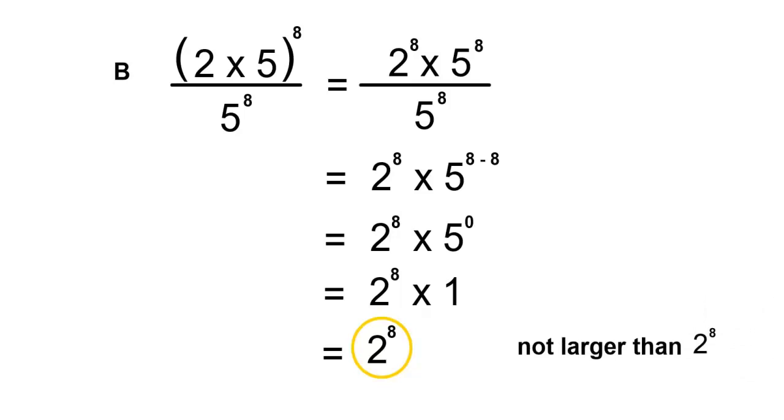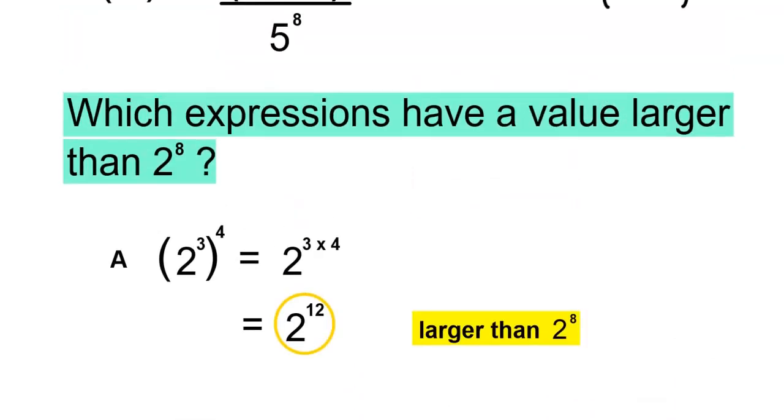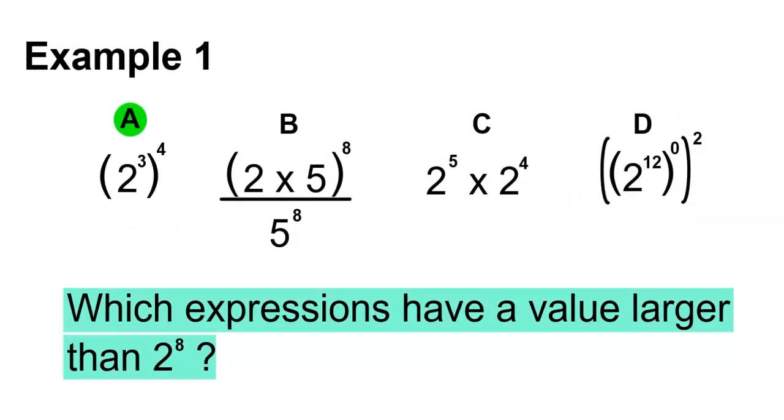And 2 to the 8 is not larger than 2 to the 8, as they're both the same. So B is incorrect.